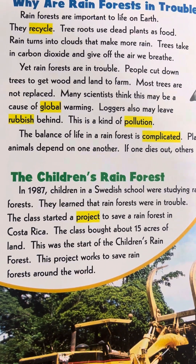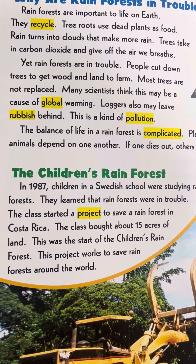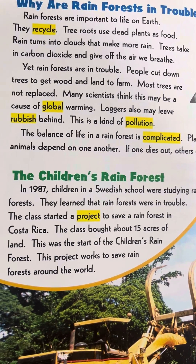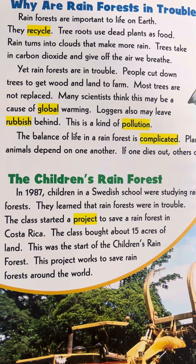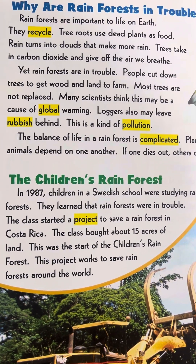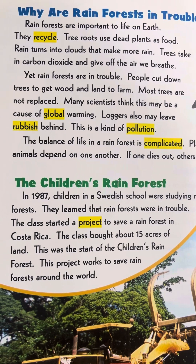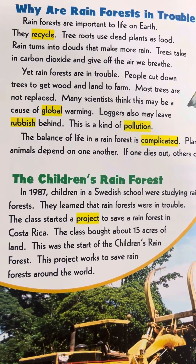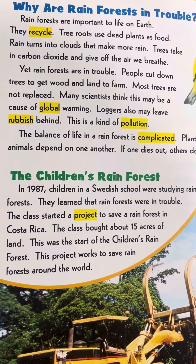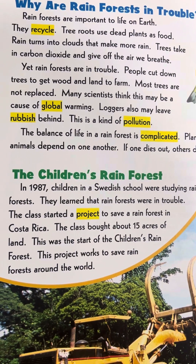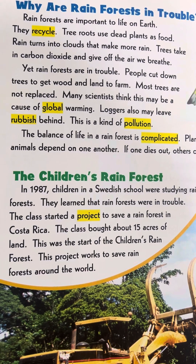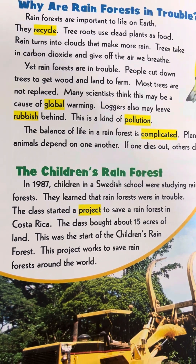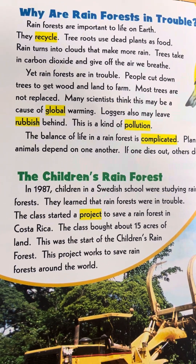Yet rainforests are in trouble. People cut down trees to get wood and land to farm. Most trees are not replaced. Many scientists think this may be a cause of global warming. Loggers may also leave rubbish behind, which is a kind of pollution.